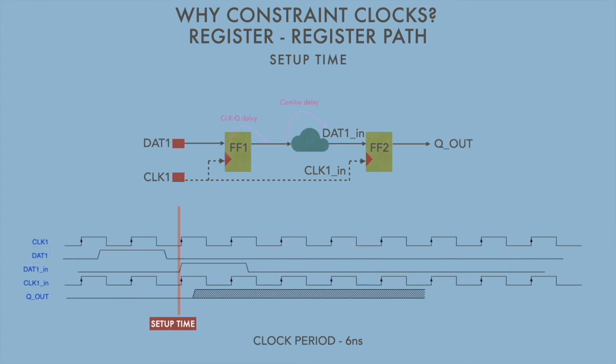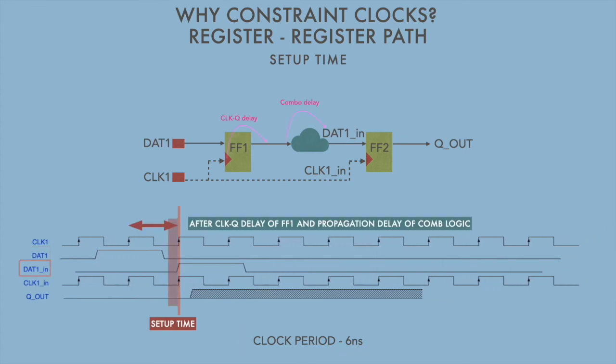The problem starts now. As the clock to queue delay and combinational delay are computed by having a constraint of clock period of 10 nanoseconds, it's a bit higher for a circuit which has a clock period of 6 nanoseconds.